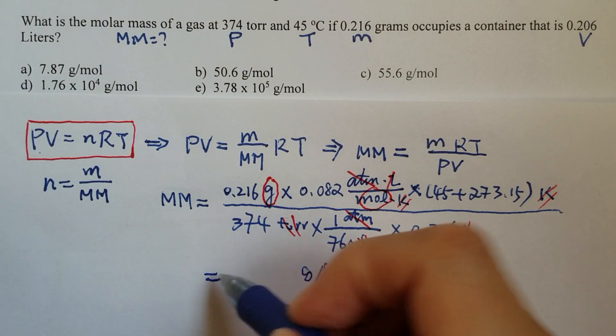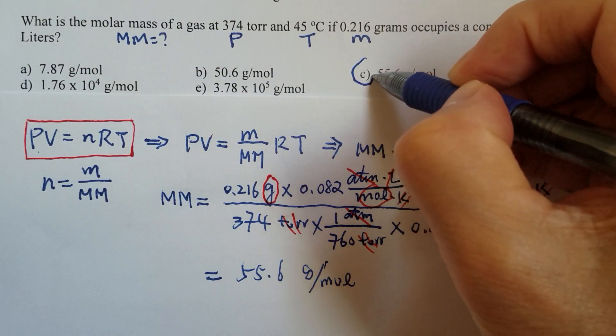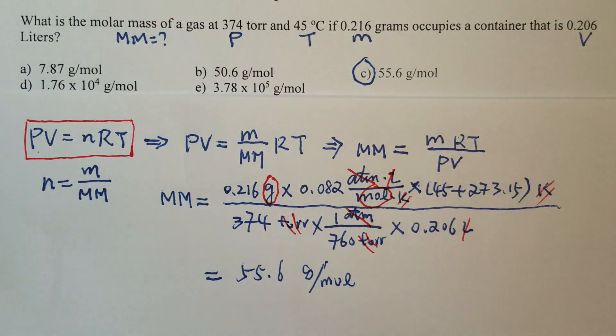Let's find out the number. The molar mass is 55.6 grams per mole, so C is the correct answer for this question.